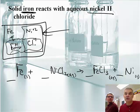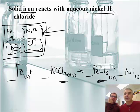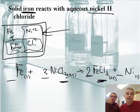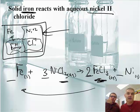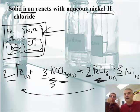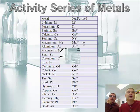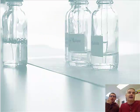Now we have to balance the equation. We've got a chlorine problem: three chlorines on the product side and two on the reactant side. When I see a three and a two, I think six. So I put a coefficient of two in front of FeCl₃ and three in front of NiCl₂. That gives me two irons, so I fix the iron side with a two. That messes up my nickel, so I put a three there. Back and forth until it's balanced.